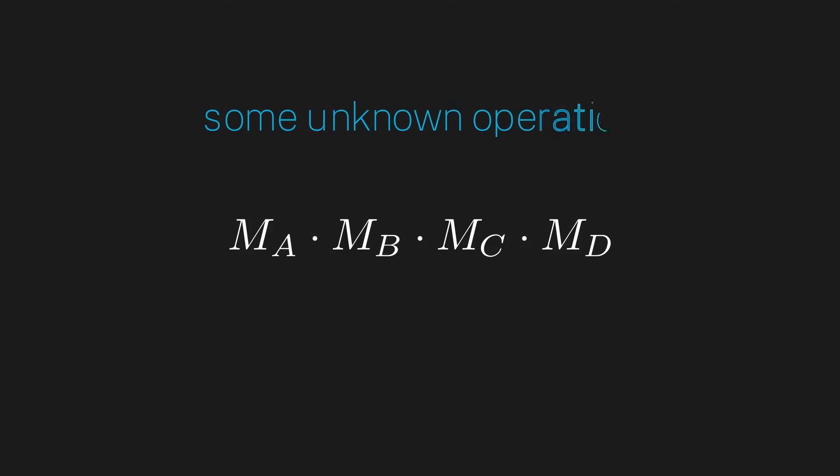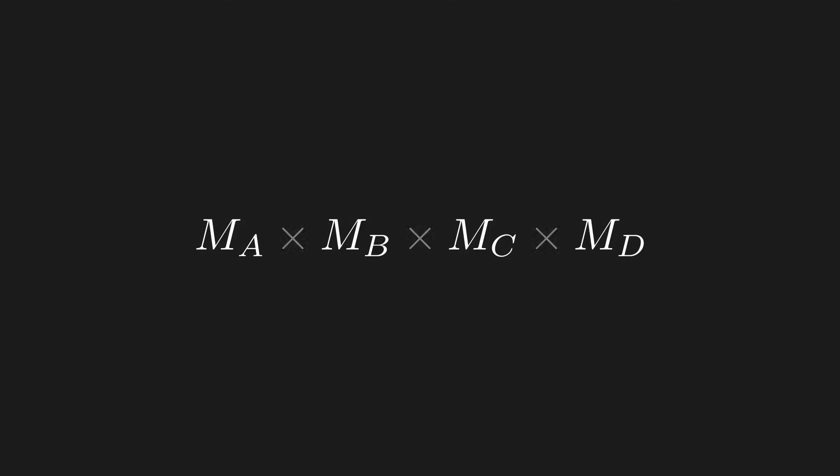So we need to put all these mathematical objects together somehow. Let's use some unknown dot operation. This dot operation could be addition, it could be multiplication, it could be something even more exotic. It's just some unknown way for us to combine our mathematical objects into one aggregate object that describes our particle before the measurement. This is a really good start.